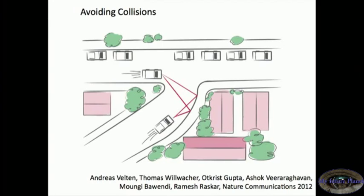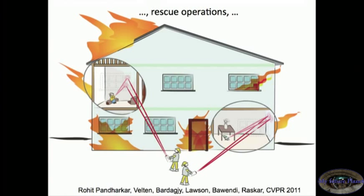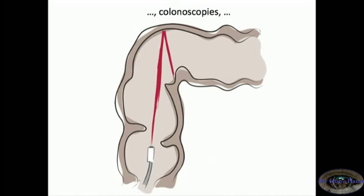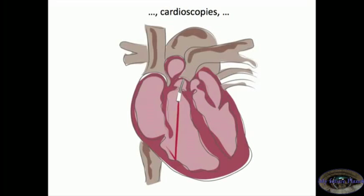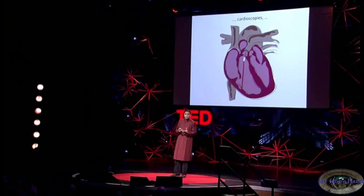Now we have some ways to go before we take this outside the lab on the road. But in the future, we could create cars that avoid collision with what's around the bend. Or we can look for survivors in hazardous conditions by looking at light reflected through open windows. Or we can build endoscopes that can see deep inside the body around occluders and also for cardioscopes. But of course, because of tissue and blood, this is quite challenging. So this is really a call for scientists to start thinking about femtophotography as really a new imaging modality to solve the next generation of health imaging problems.